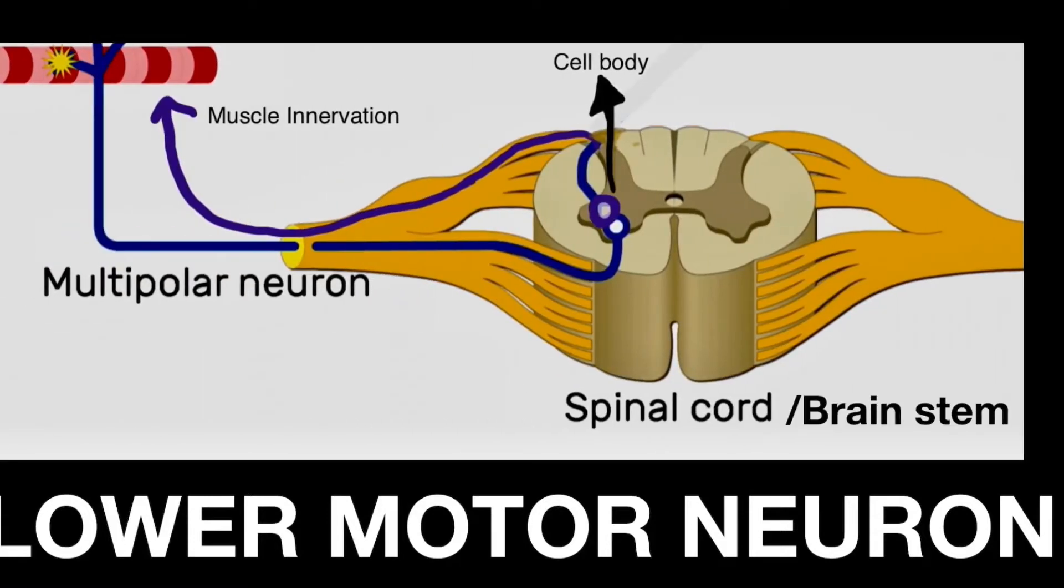Let us see what is a lower motor neuron. Lower motor neurons are those that originate in spinal cord or brain stem and directly or indirectly innervate muscle fibers.